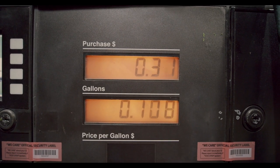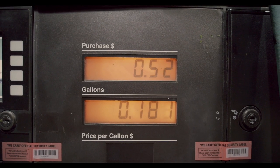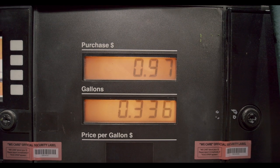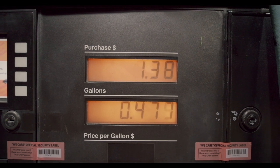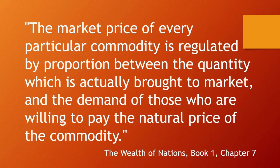The rest of Chapter 7 tries to explain what gives a commodity its market price, and his ideas are as true today as they were then. The market price of every particular commodity is regulated by the proportion between the quantity which is actually brought to market and the demand of those who are willing to pay the natural price of the commodity.